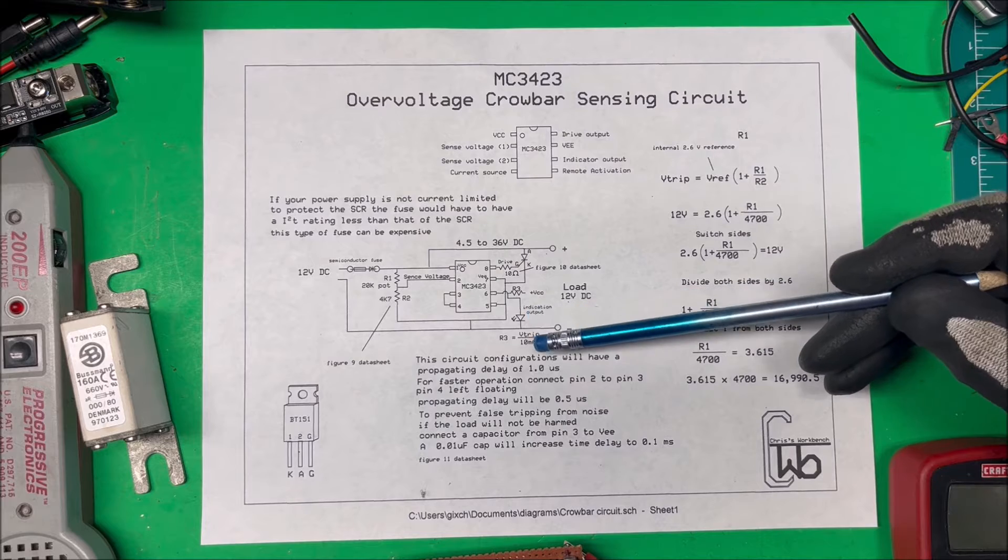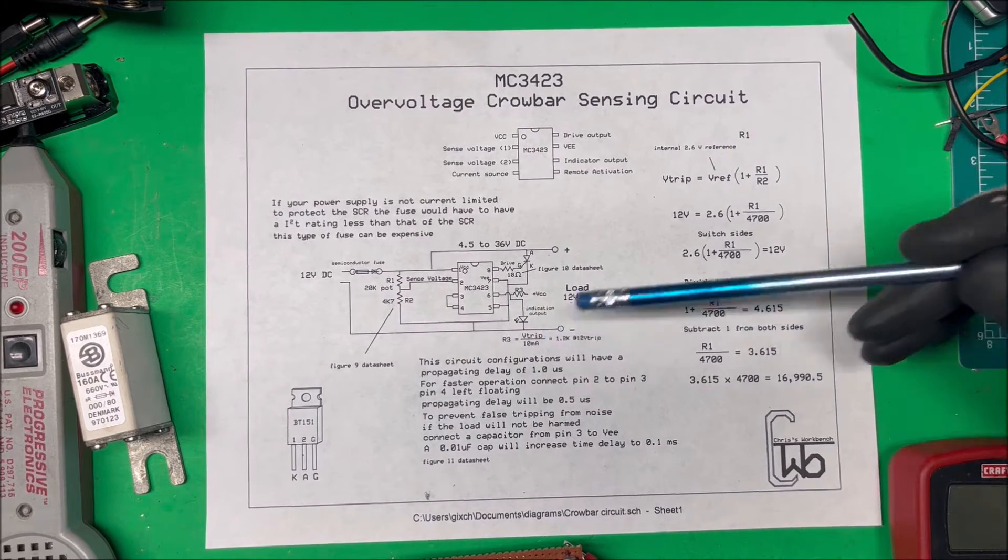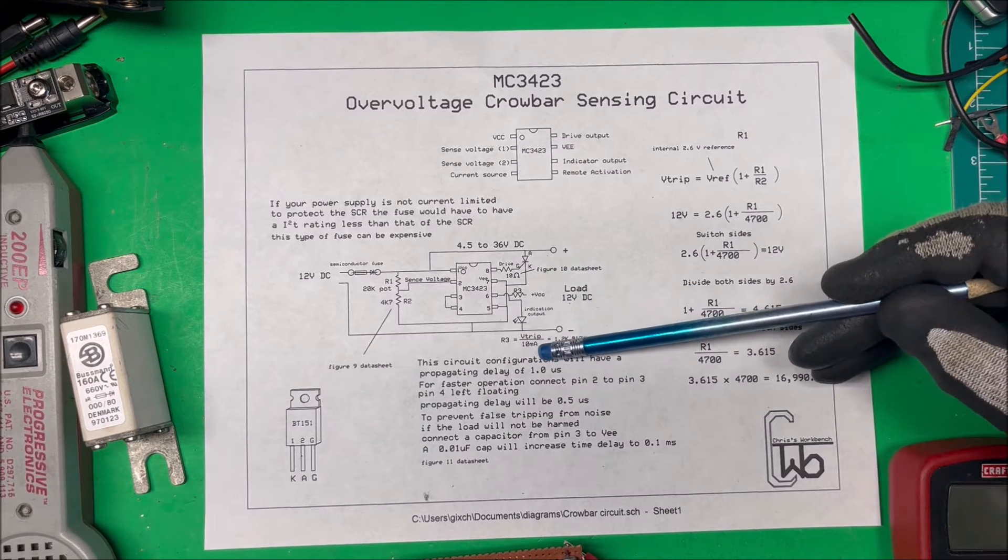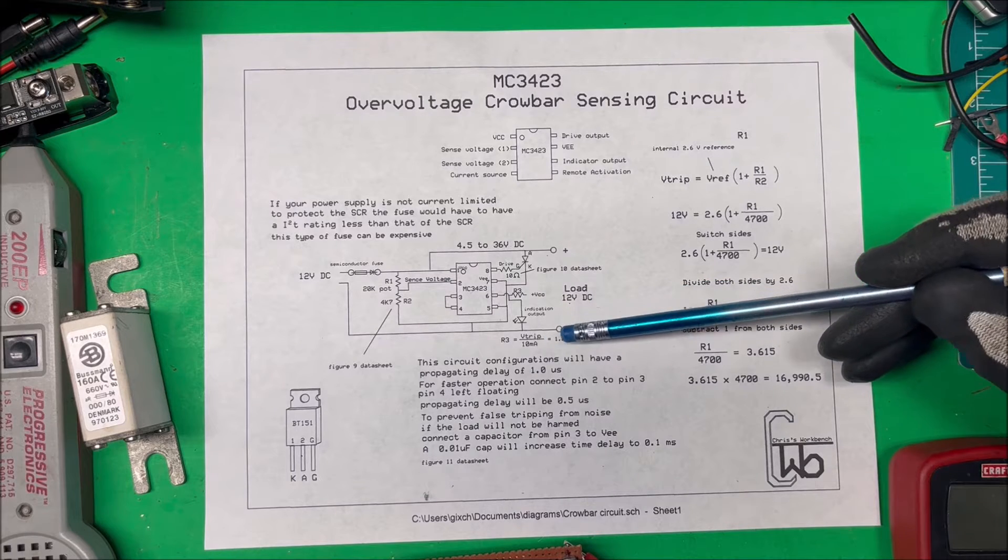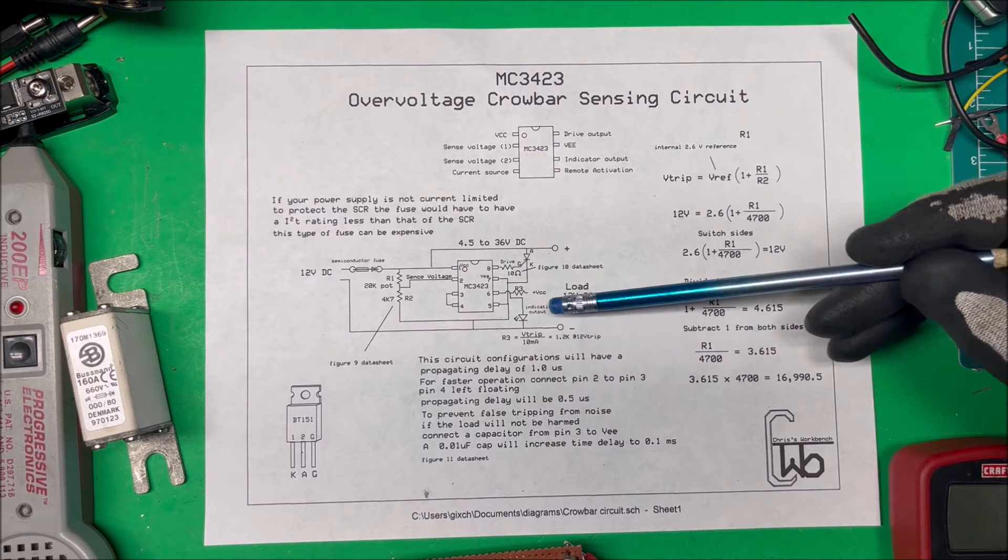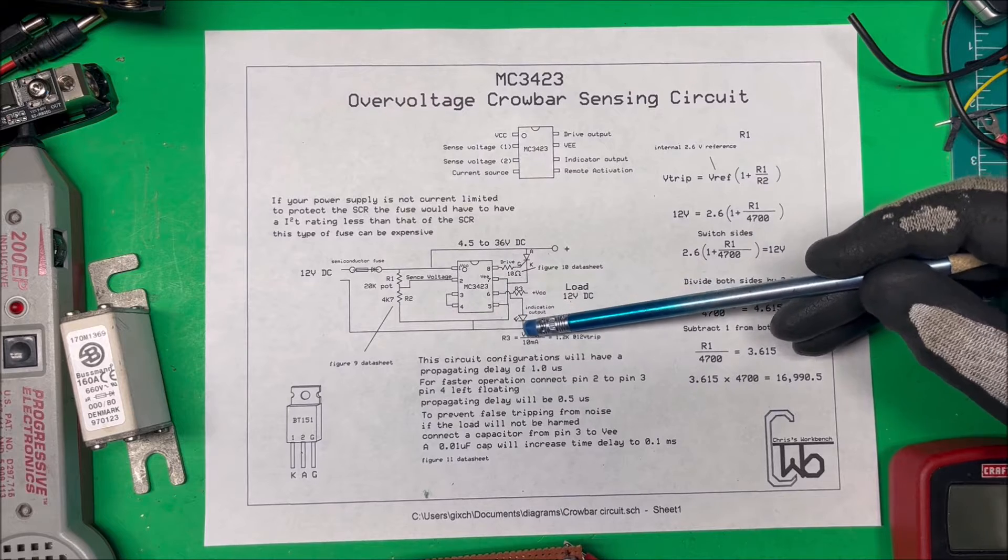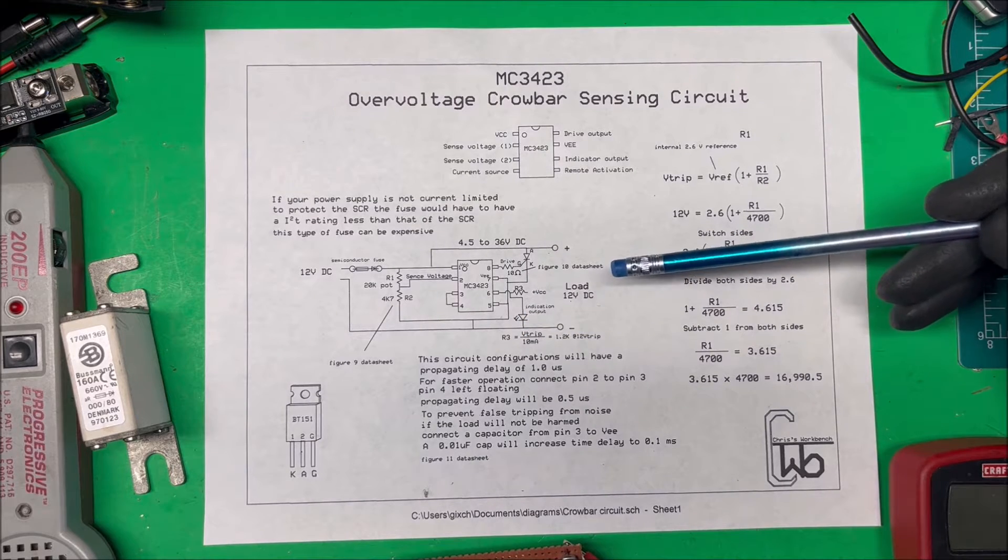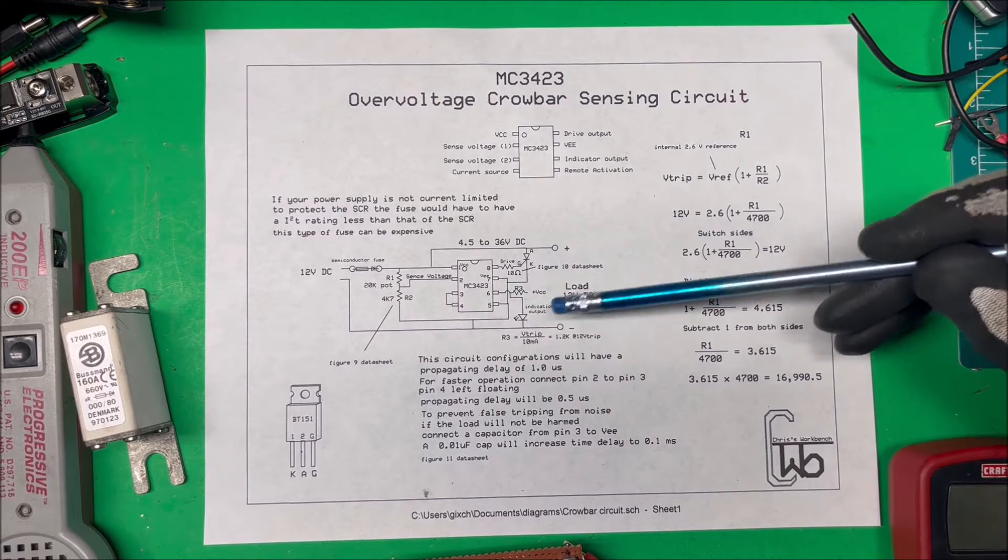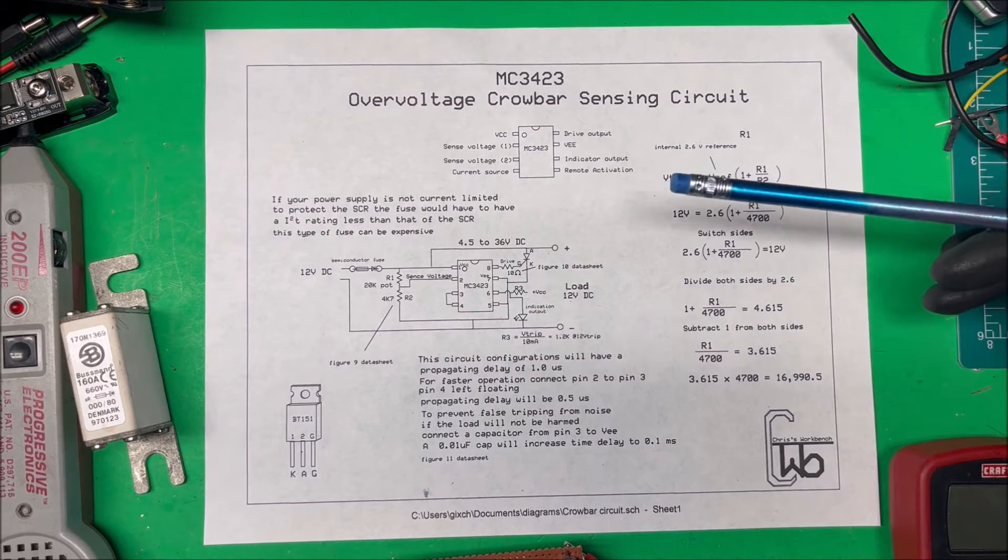I have one more: pin 6 is an indicator output, and I'm just going to put an LED across that. That's R3. To calculate that, take your trip voltage, which is 12 volts—this thing's good for 10 milliamps on that pin—so divide by 10 milliamps. R3 is going to be a 1.2k ohm resistor. I'm going to put my LED from the pin down to ground, and that will turn on. It'll turn off when the SCR shorts out.